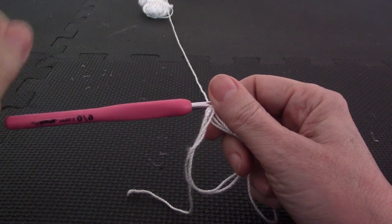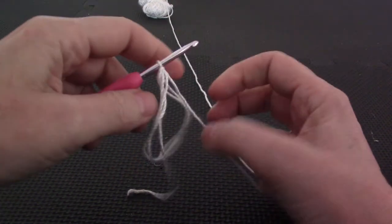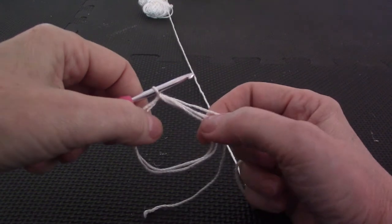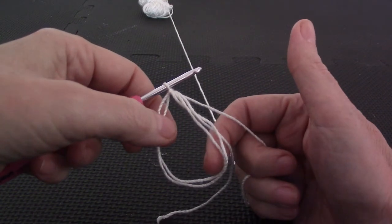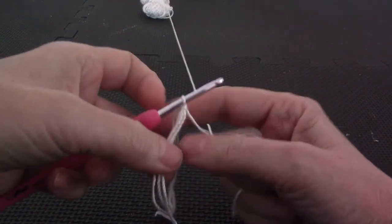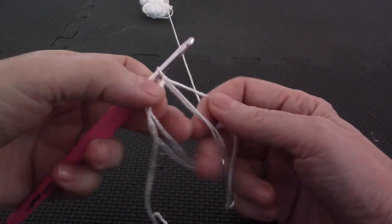First important point: you crochet away from the tail. So if it was looking like this then you would know your magic loop is the wrong way around. Turn it back. You need to crochet away from the tail.